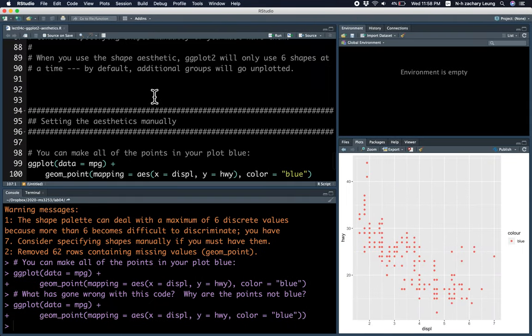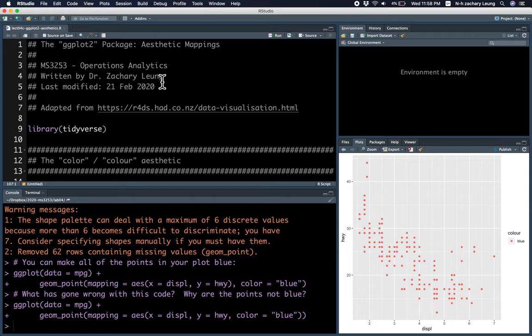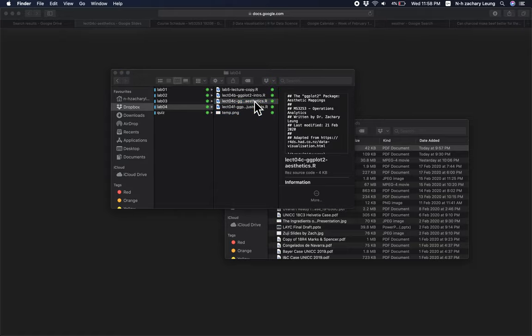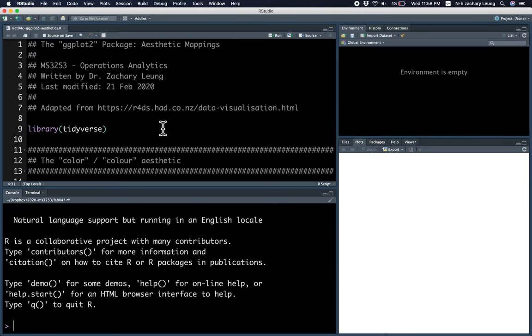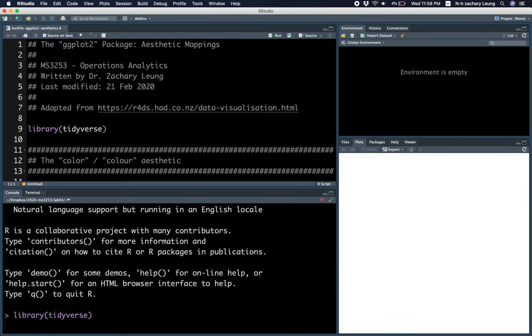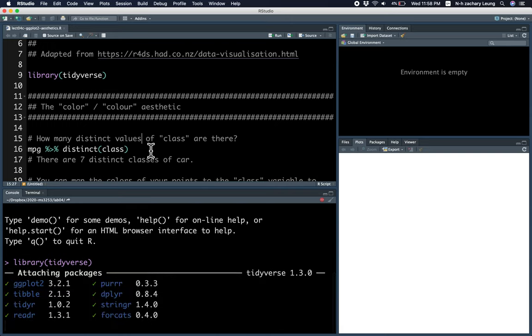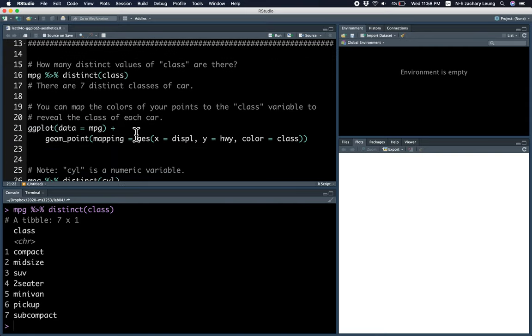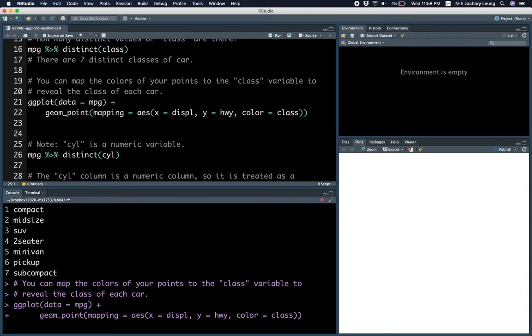All right, that's great. Let's move to a quick coding demo before my computer shuts down due to lack of power. So notice that using the distinct function, you can tell there are seven different classes of car. You can map the colors based on the class like so.